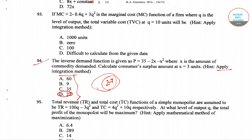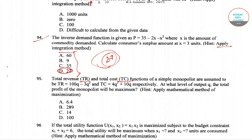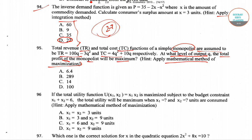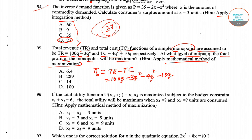In question number 95, total revenue and total cost curves of a monopolist firm are given. We need to find the level of q at which total profit is maximum, applying the mathematical method of maximization. The profit function is total revenue minus total cost: 100q minus 3q squared minus 4q squared minus 10q, which simplifies to 90q minus 7q squared.